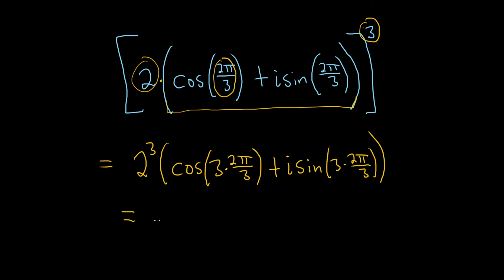And then so 2 cubed is equal to 8. And then these cancel here, so we get the cosine of 2 pi plus i sine, same thing here, the 3's cancel, so we get 2 pi.